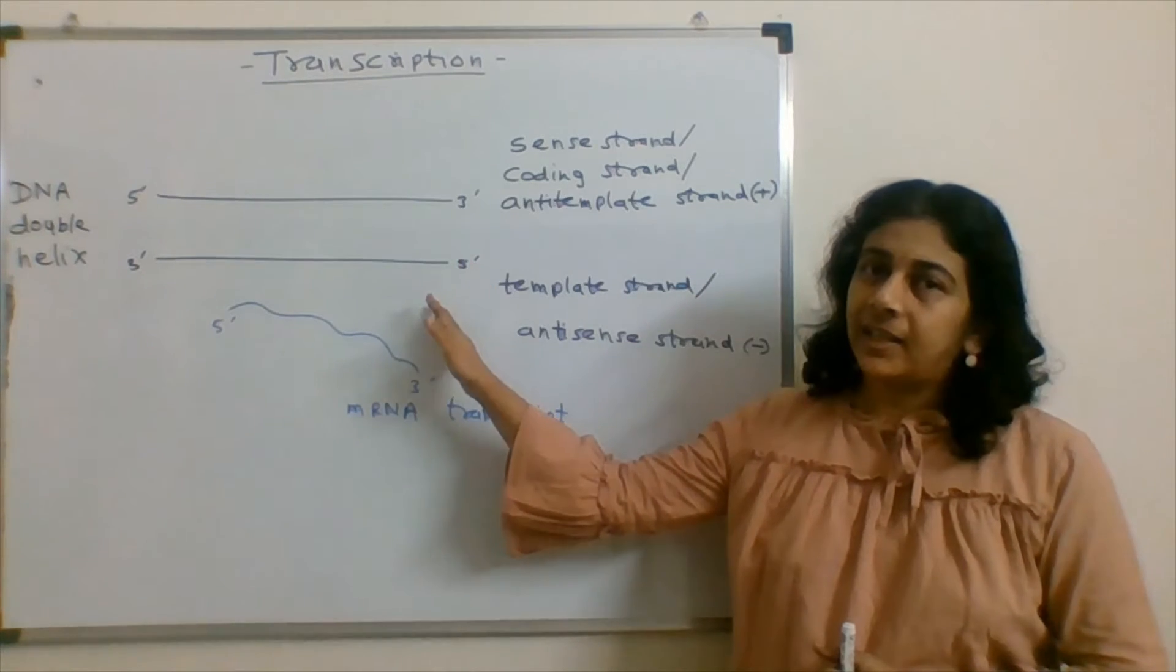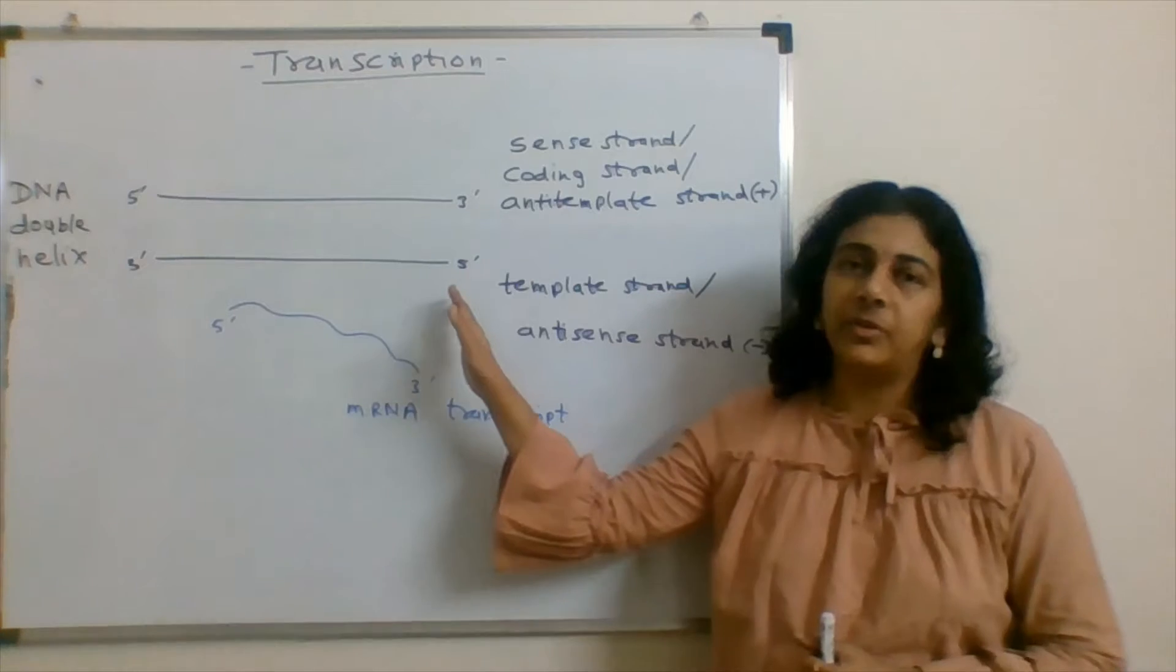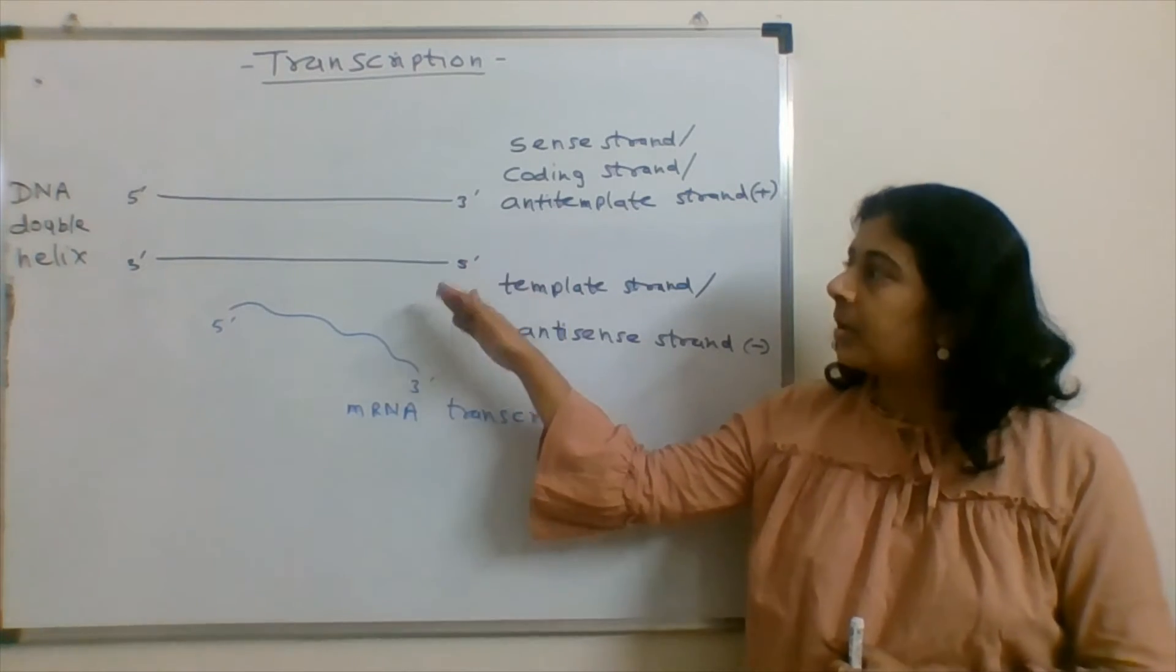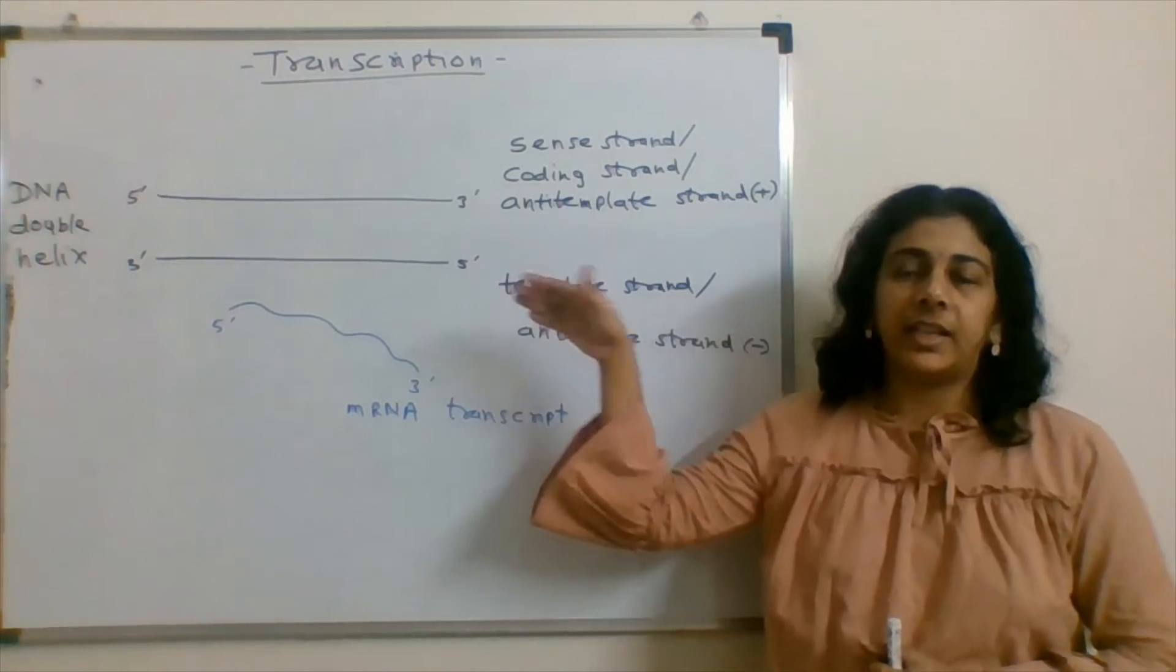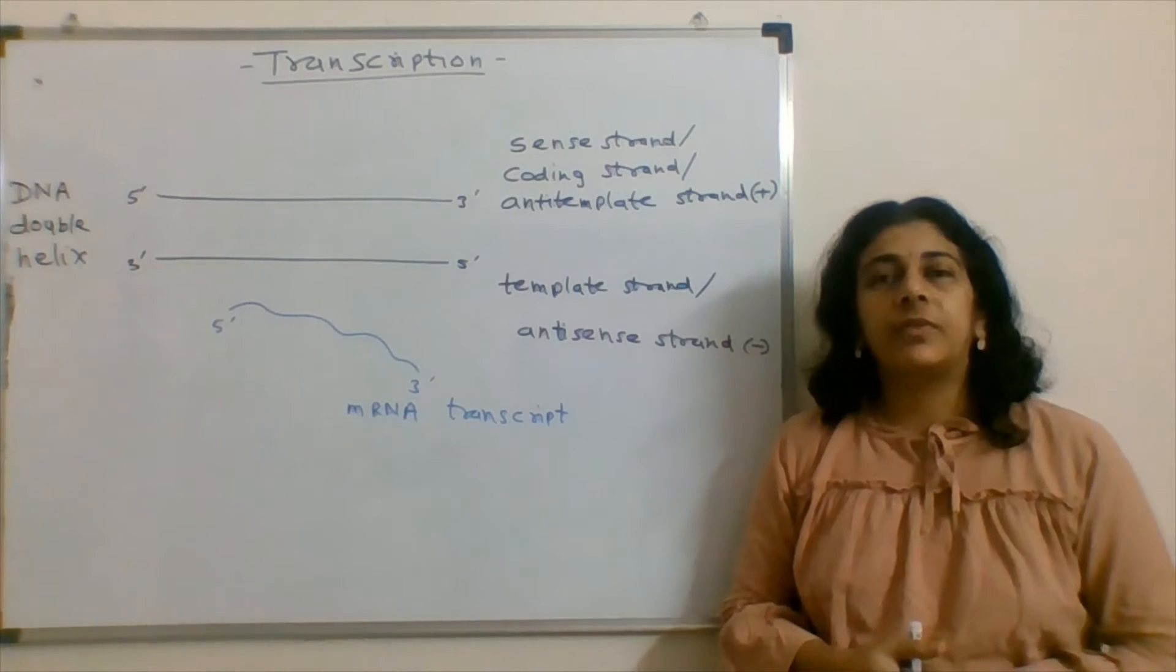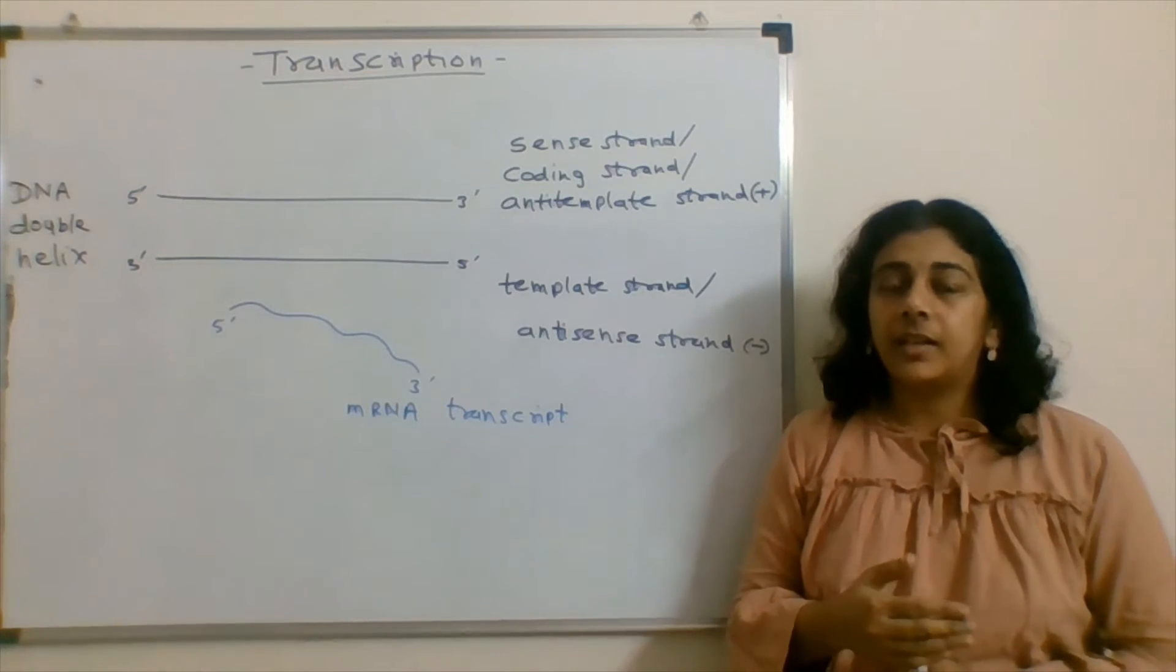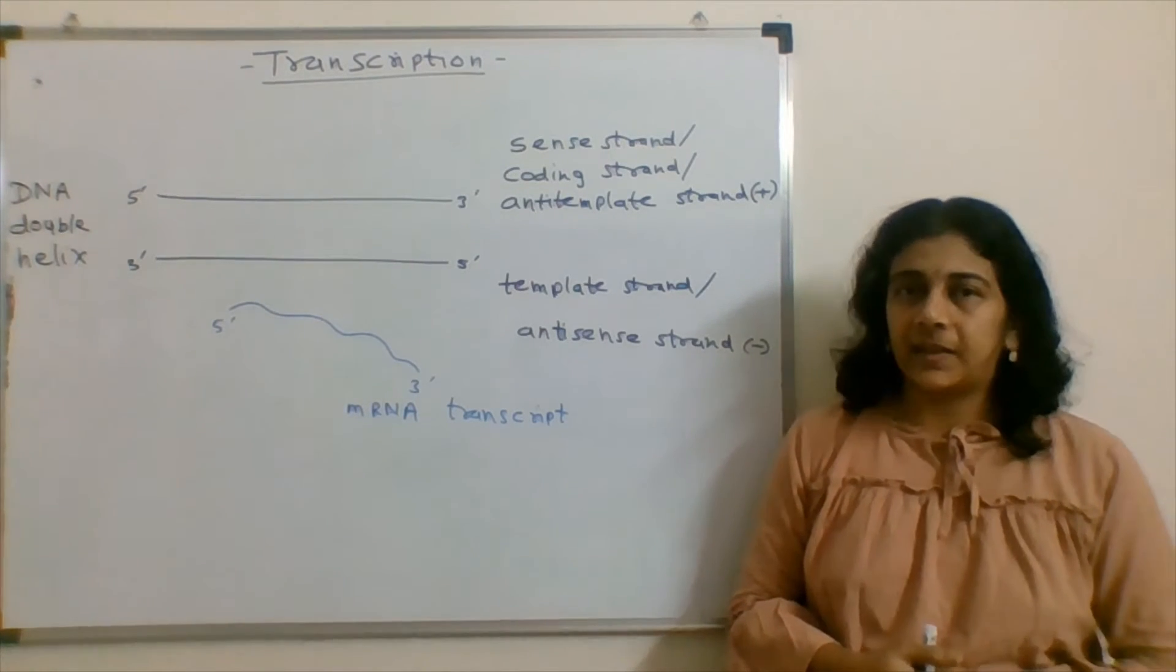The template DNA which is used here is from 3 prime to 5 prime. On both strands of DNA, the genes are present, but depending on the location of promoter, which DNA will get transcribed is decided.